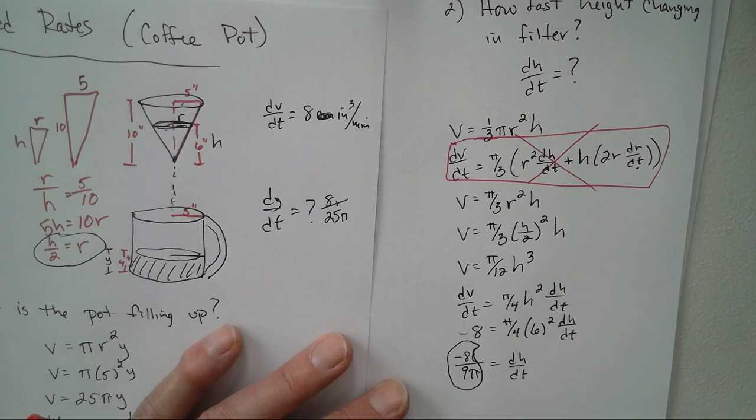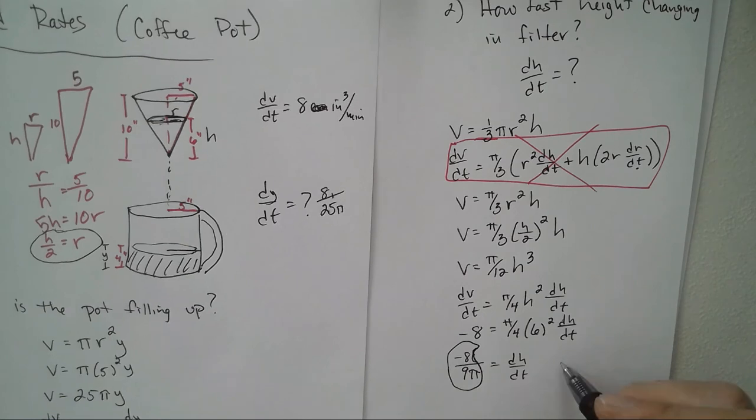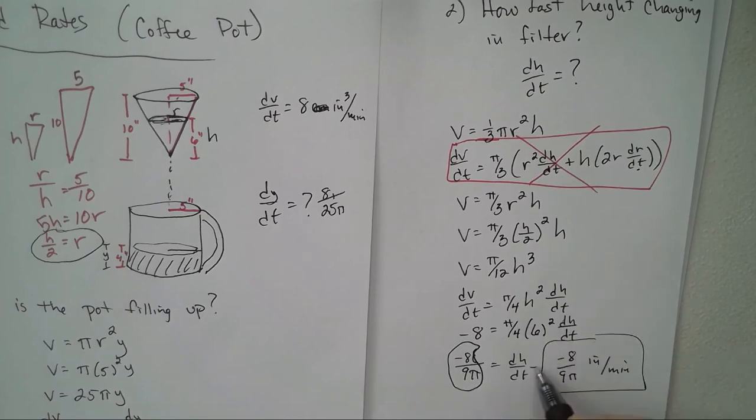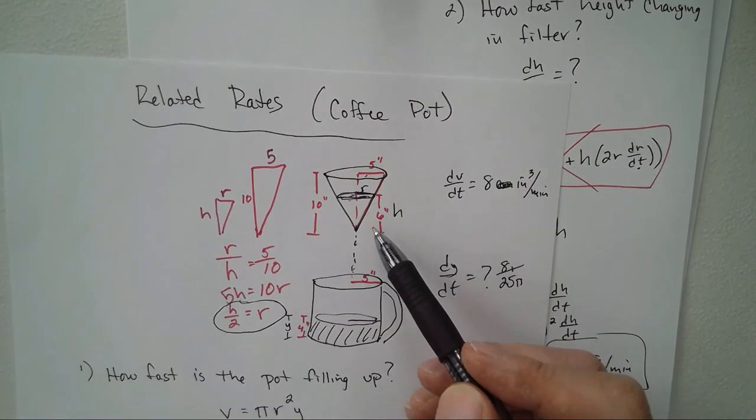Alright, so my units would be inches per minute. And does it make sense that it's negative? Yes, the height is decreasing, so we should have a negative number.